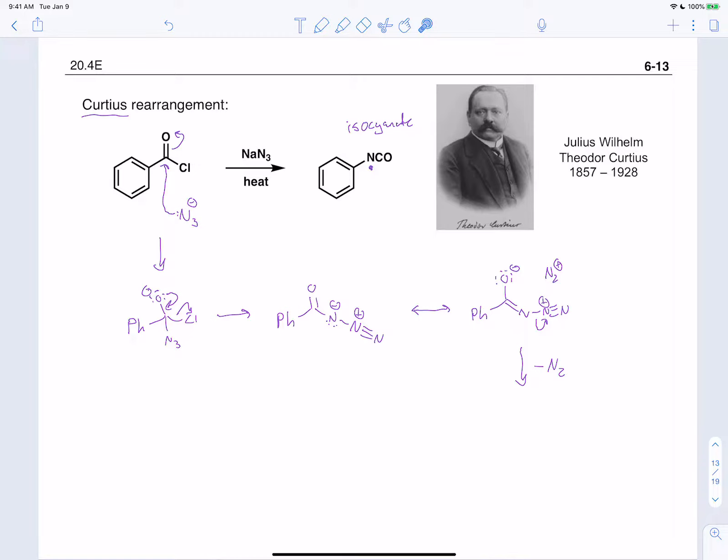this sigma bond can migrate over. And this sigma bond migration is further promoted by the lone pair able to come down and make a carbon-oxygen double bond. So along the way, we're going to have this phenyl ring attached now to this nitrogen. We're going to make a carbon-oxygen double bond. And this gets us to the isocyanate directly.